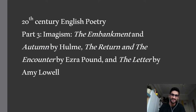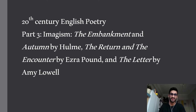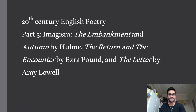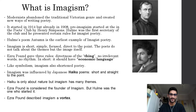Hello everyone. Today we are going to talk about 20th century English poetry — it is Part 3. As you remember, in the first two parts we talked about symbolist poetry and war poetry. In this part we are going to talk about imagist poetry — imagism. We will analyze several poems: 'The Embankment' and 'Autumn' by Hulme, 'The Return' and 'The Encounter' by Ezra Pound, and 'The Letter' by Amy Lowell.